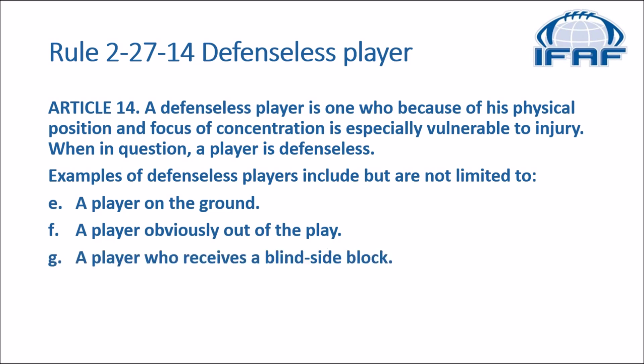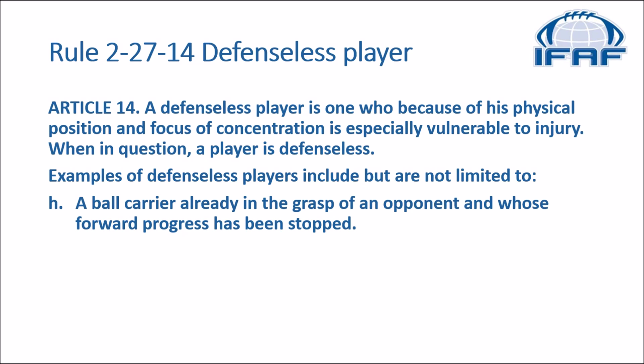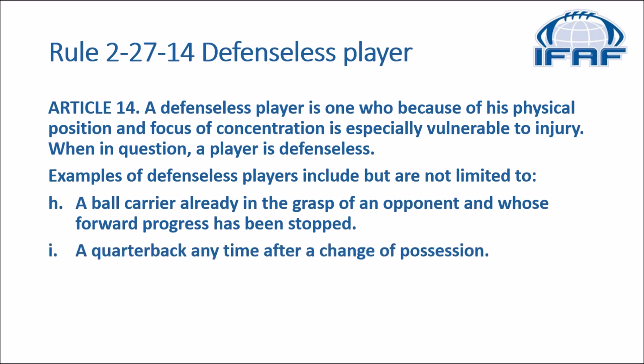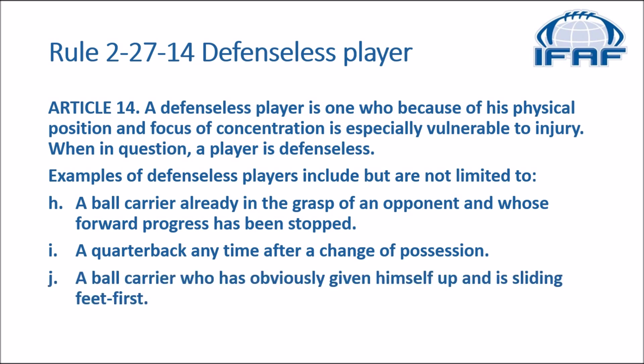F, which is also the focus of this training tape: a player obviously out of the play. G: a player who receives a blindside block. H: a ball carrier already in the grasp of an opponent and whose forward progress has been stopped. I: a quarterback any time after a change of possession. And finally, J: a ball carrier who has obviously given himself up and is sliding feet first.